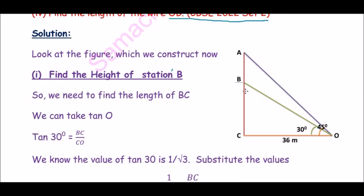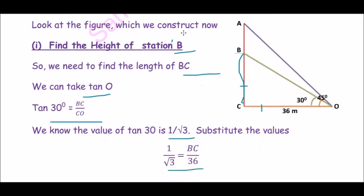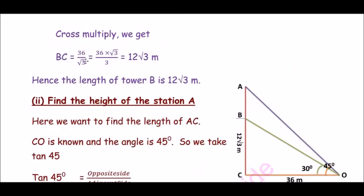After constructing the diagram, look at the figure. First question: find the height of station B. So we need to find the length of BC. We can take tan O. Tan 30 degrees equals BC by CO. We know that the value of tan 30 is 1 by root 3. Substitute the values: 1 by root 3 equals BC by 36. Cross multiply, we get BC equals 36 by root 3. Multiply root 3 in numerator and denominator, we get 36 root 3 divided by 3, that is equal to 12 root 3 meters. Hence, the height of station B is 12 root 3 meters.